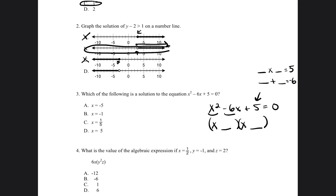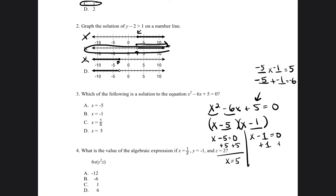If I multiply negative 5 and negative 1, that's equal to positive 5. And if I add negative 5 plus negative 1, that's equal to negative 6. So my answer must be negative 5 and negative 1. So we set each factor equal to 0: x minus 5 equals 0, and x minus 1 is equal to 0. Solving those, x is equal to 5 and x is equal to 1. So the answers to this solution are x equals 5 or x equals 1.